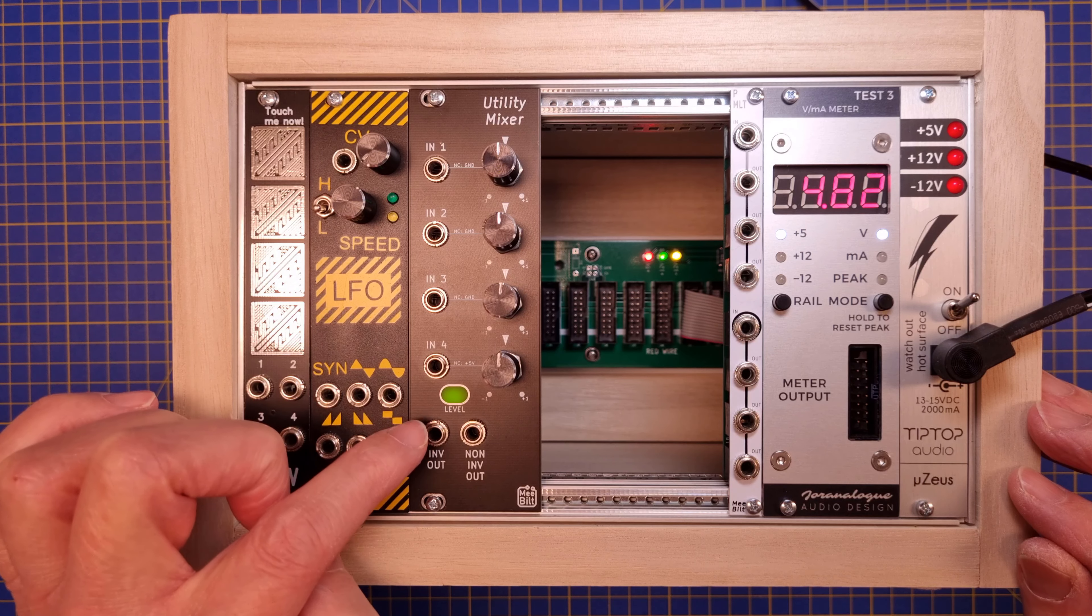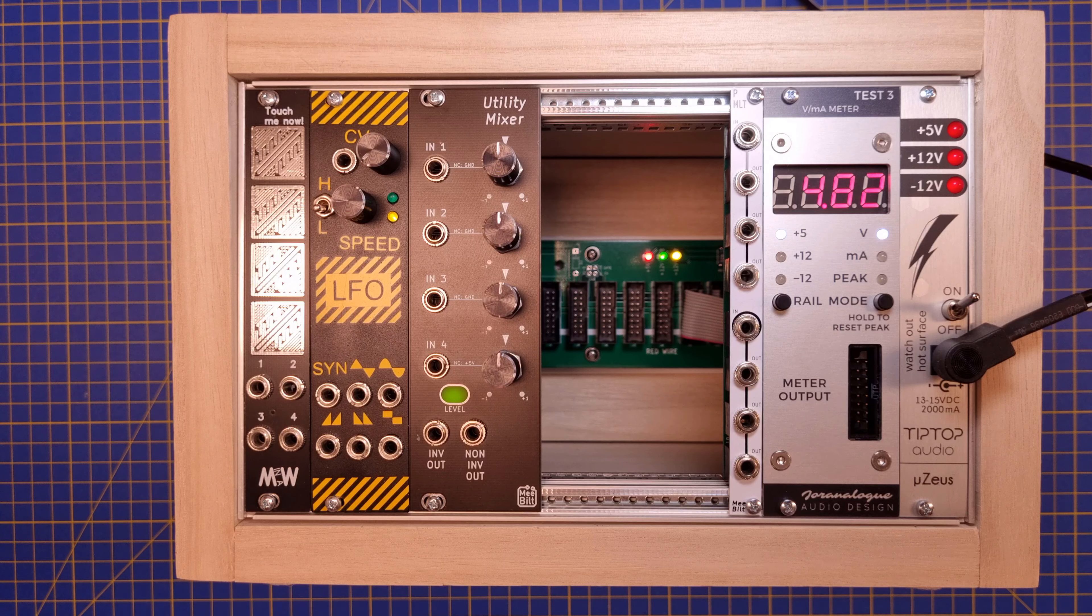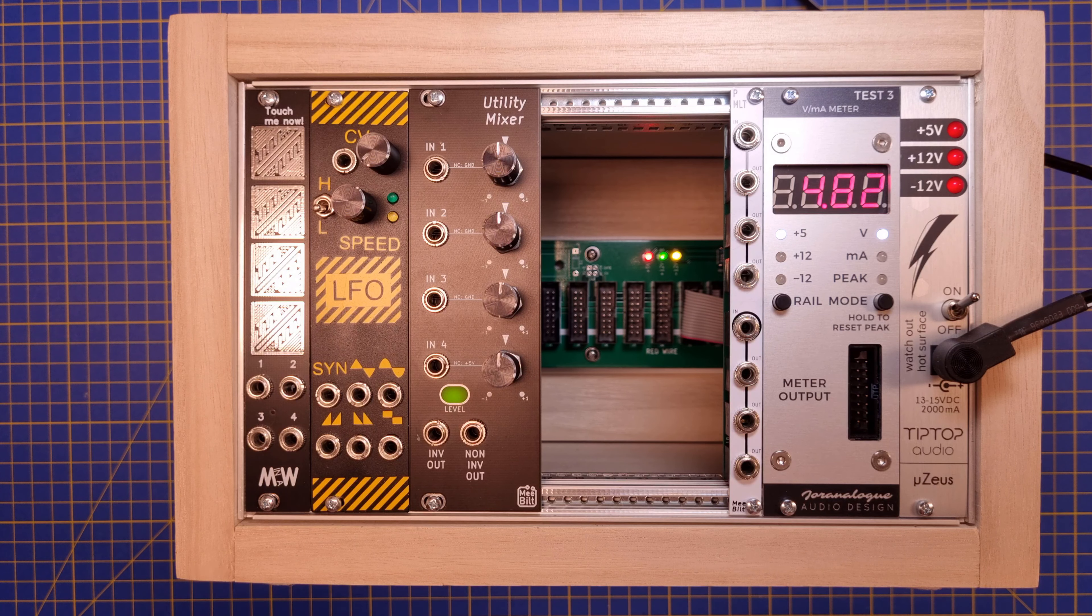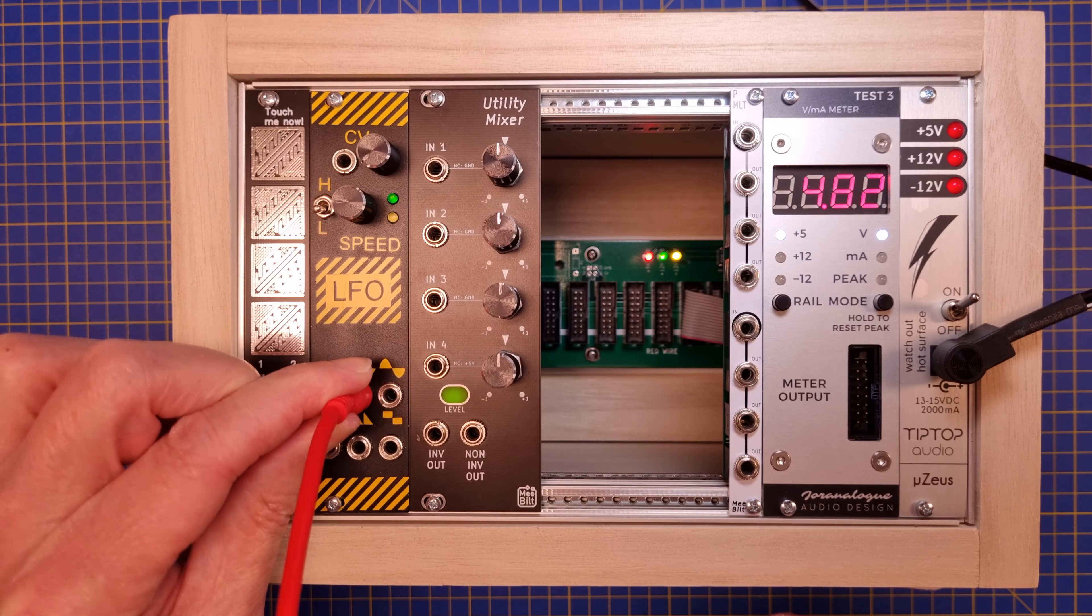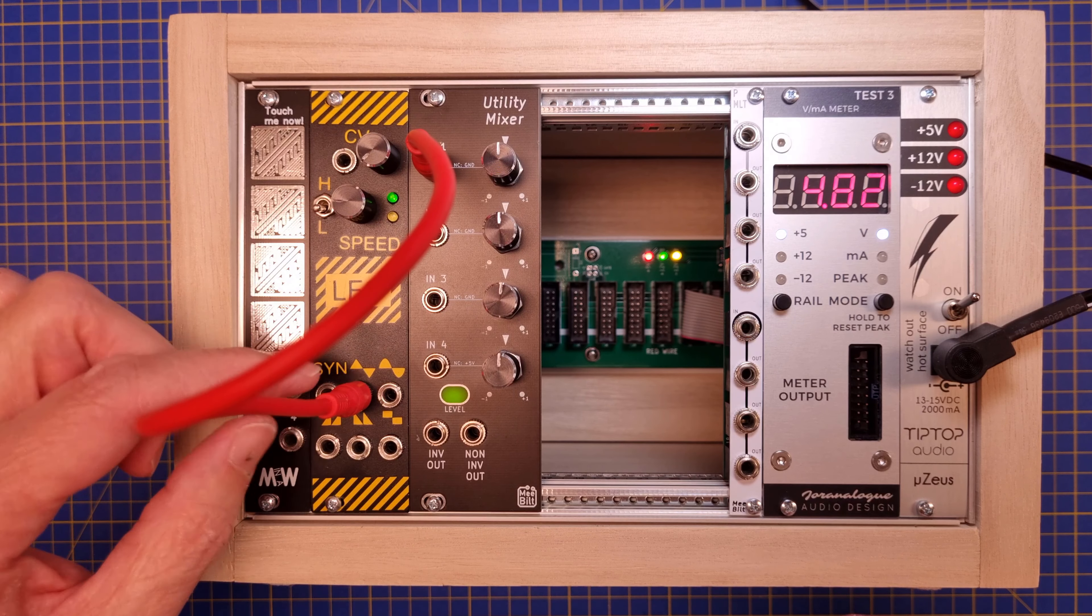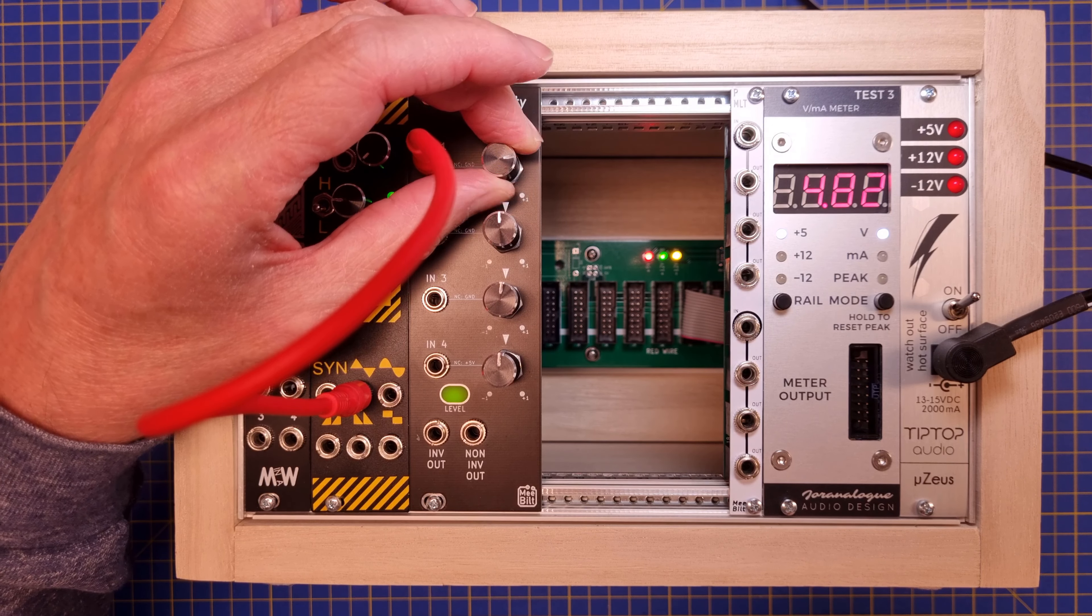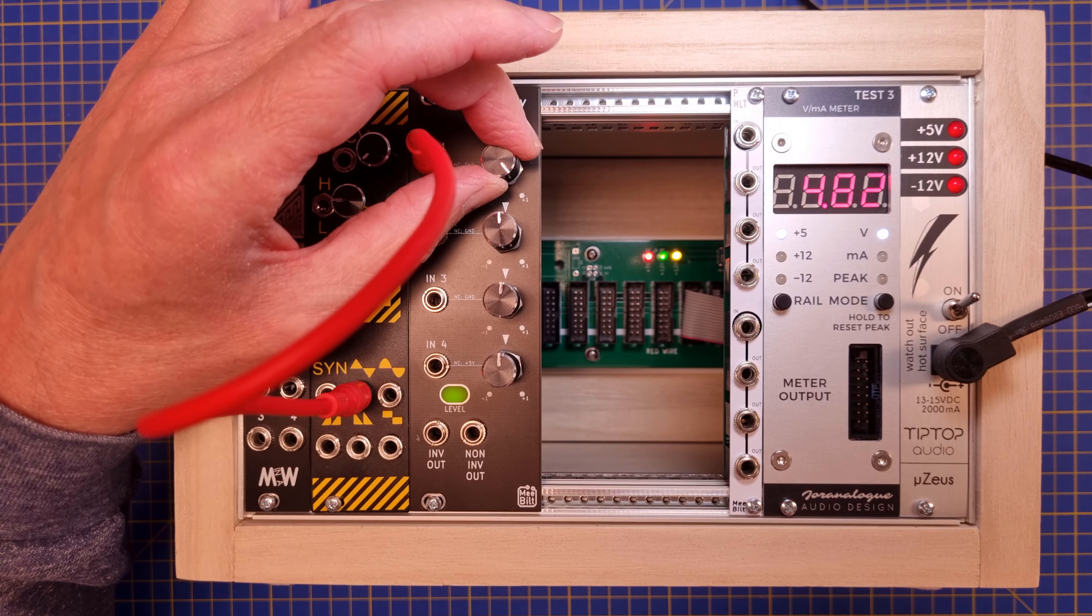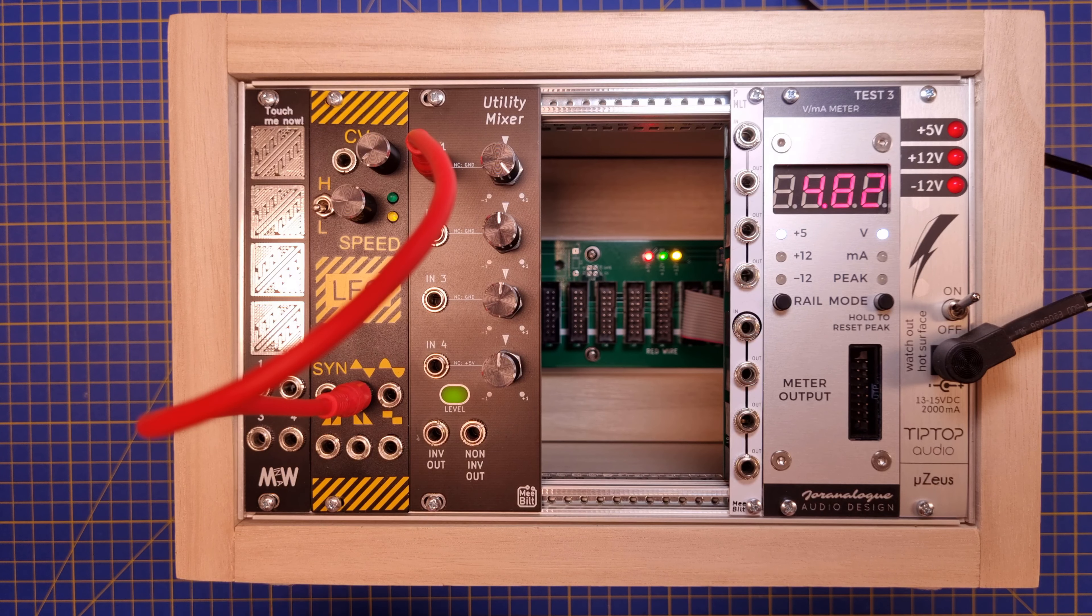As you can see the level is showing in green here because we don't have any signal yet, so we are not reaching any threshold. And if I hook up triangle wave output and I increase the gain on that input, you can still see that the level is still below the threshold or the warning level.